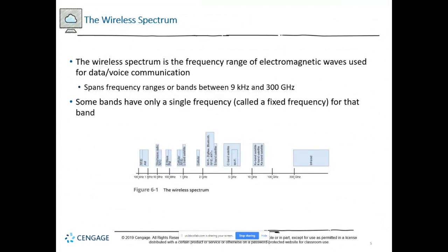We have different spectrums. Our two most common are 2.4 and 5 gigahertz for Wi-Fi. But we have all these other different spectrums — RFID, Z-Wave, and other stuff — and they all use different frequencies to communicate.